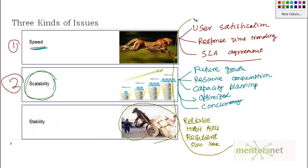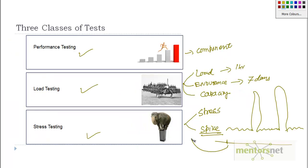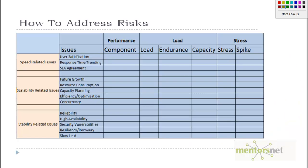Now we have defined many kinds of issues and many types of tests. In this table, the rows are issue types and the columns are test types. For user satisfaction: component testing can address it, load testing can also address it since running a load test shows how things respond with thousands of users, and capacity testing will too. Stress and spike testing won't address user satisfaction because those involve extreme, unrealistic loads.